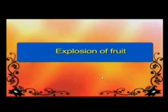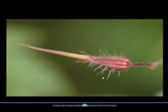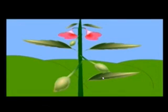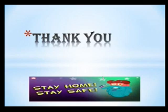Another method is the explosion of fruits. Plants like peas and beans burst open when they are dry, throwing the seeds away from the parent plant, and then new plants start growing at that place. So this is called the dispersal of seeds and the means of dispersal of seeds. Thank you.